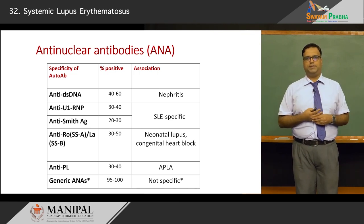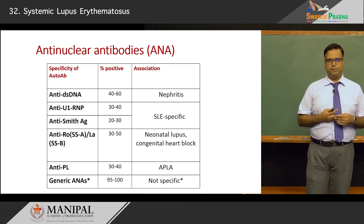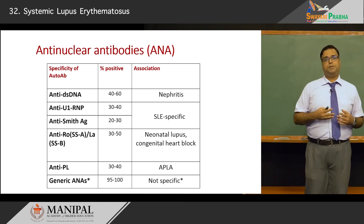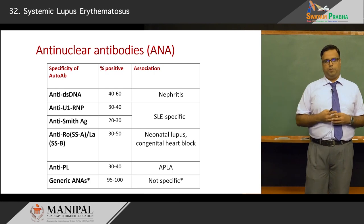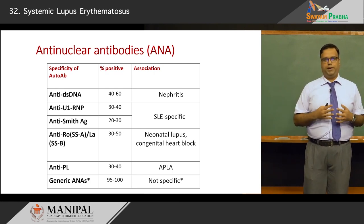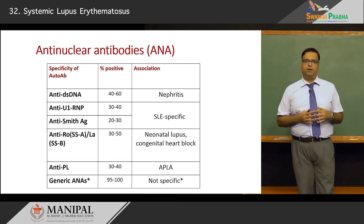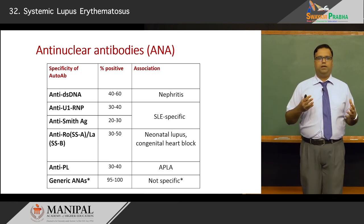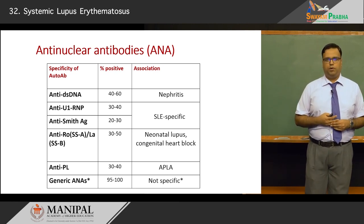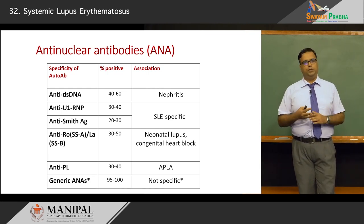Other antibodies include anti-Ro and anti-La, called SSA and SSB respectively, typically seen in congenital heart block or neonatal lupus and pathognomonic of those conditions. Antibodies against phospholipids are present in around 30 to 40 percent of cases. Generic anti-nuclear antibodies have a prevalence upward of 90 percent but are not diagnostic of SLE, as they may overlap with other connective tissue disorders.